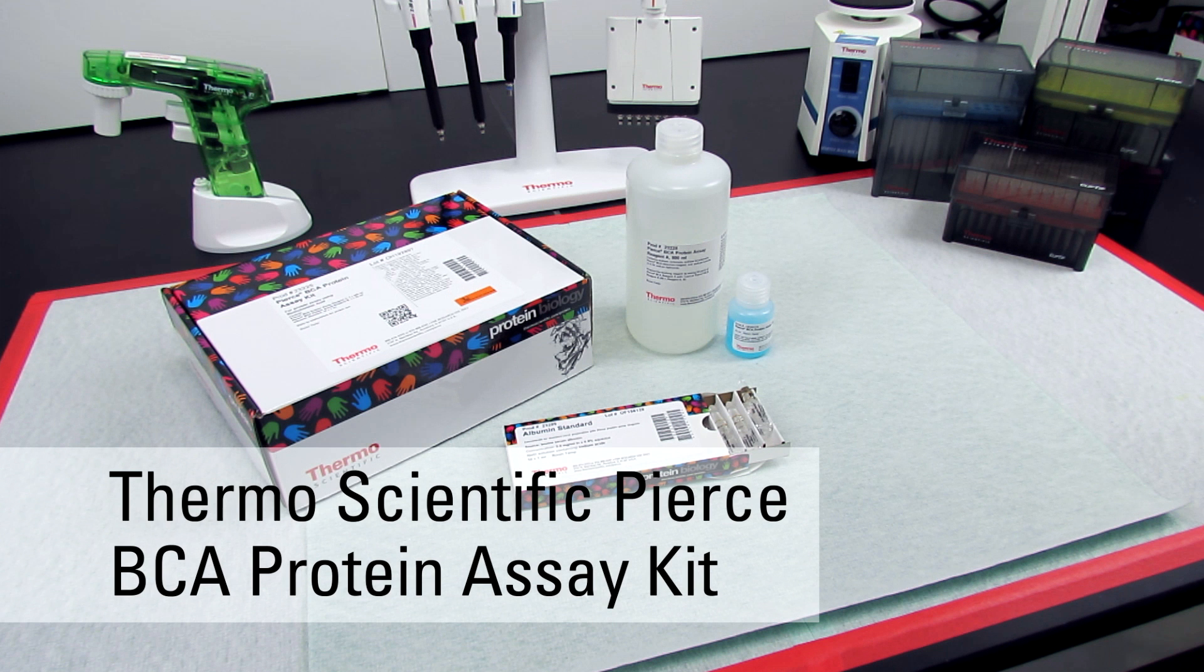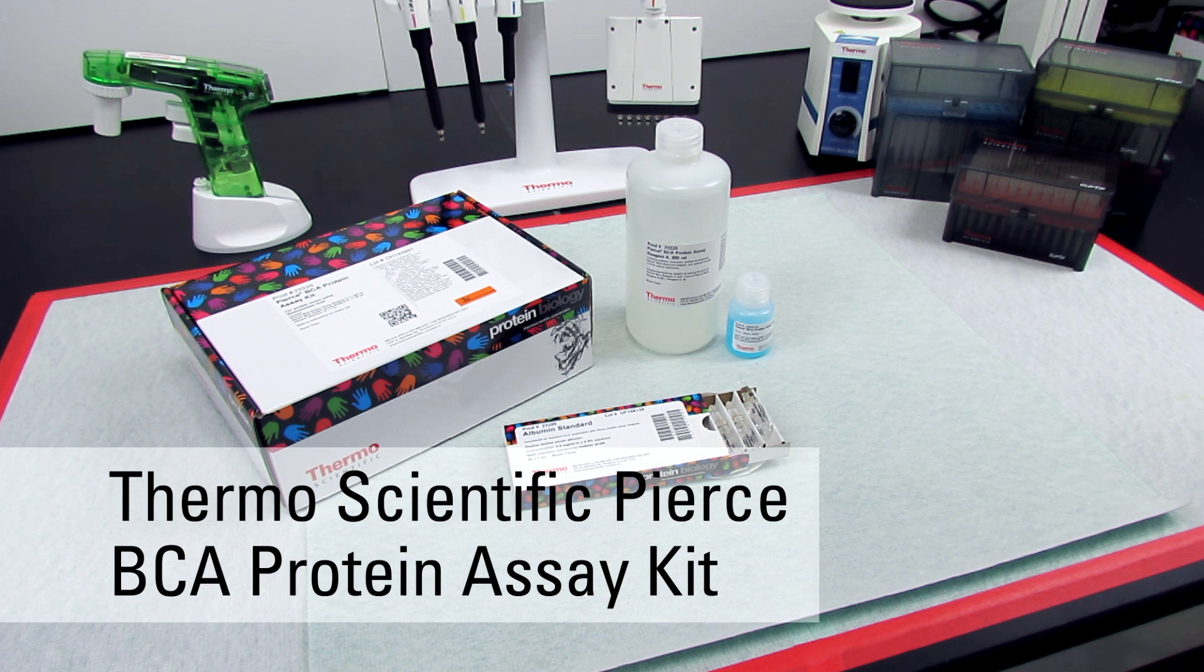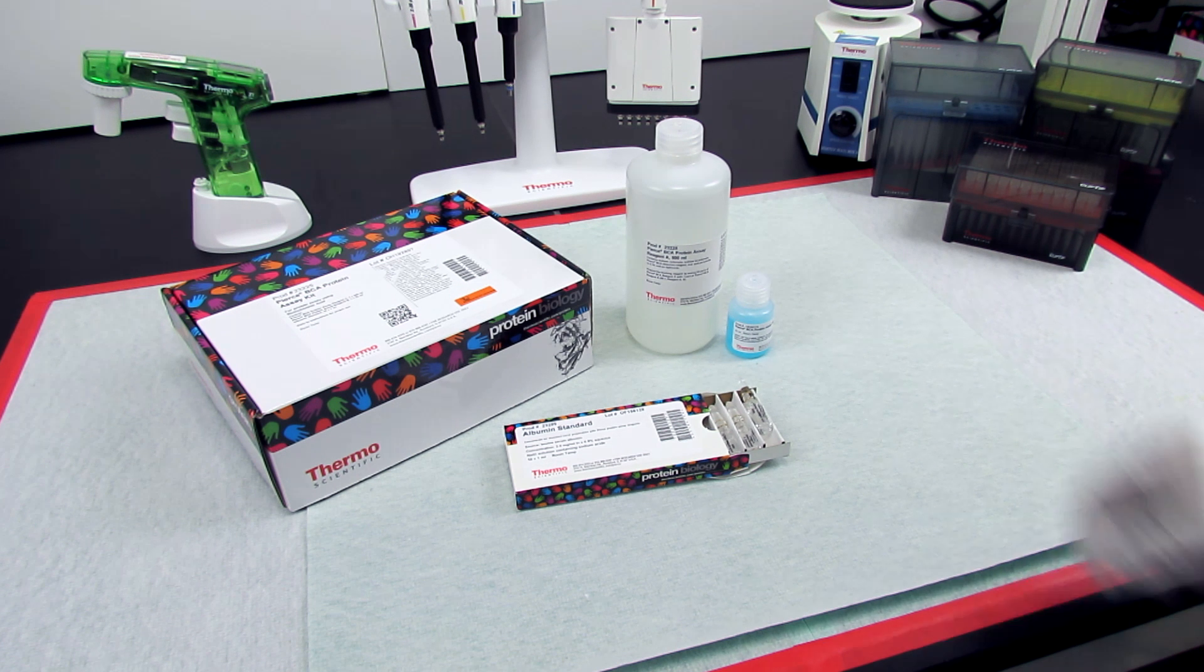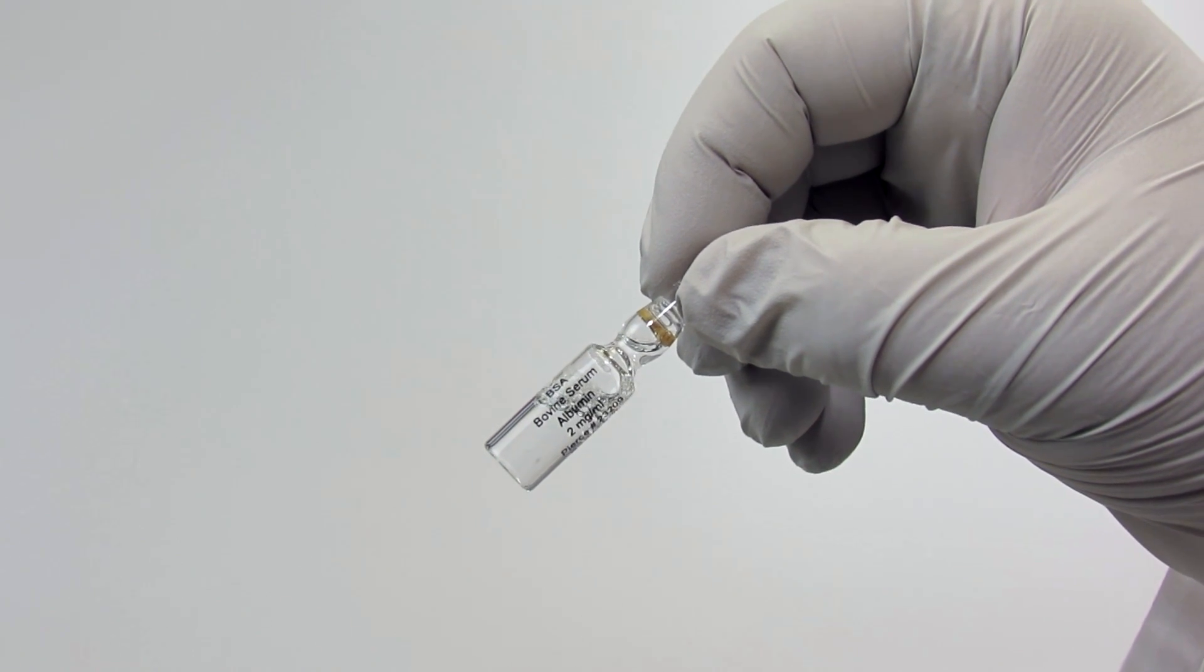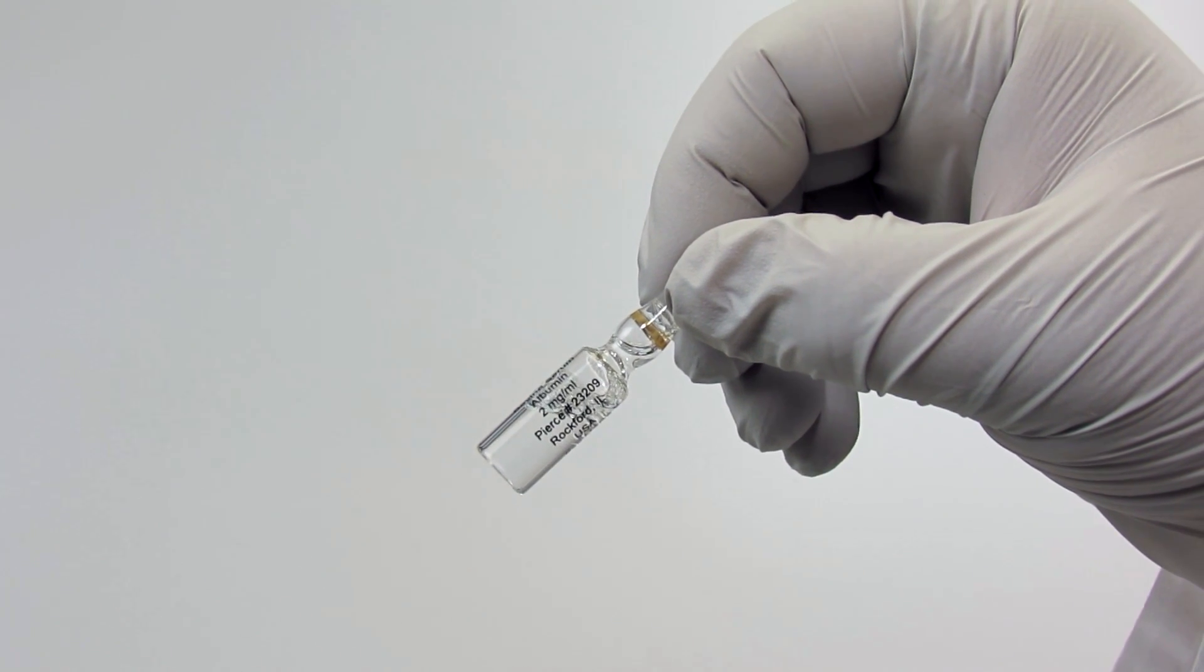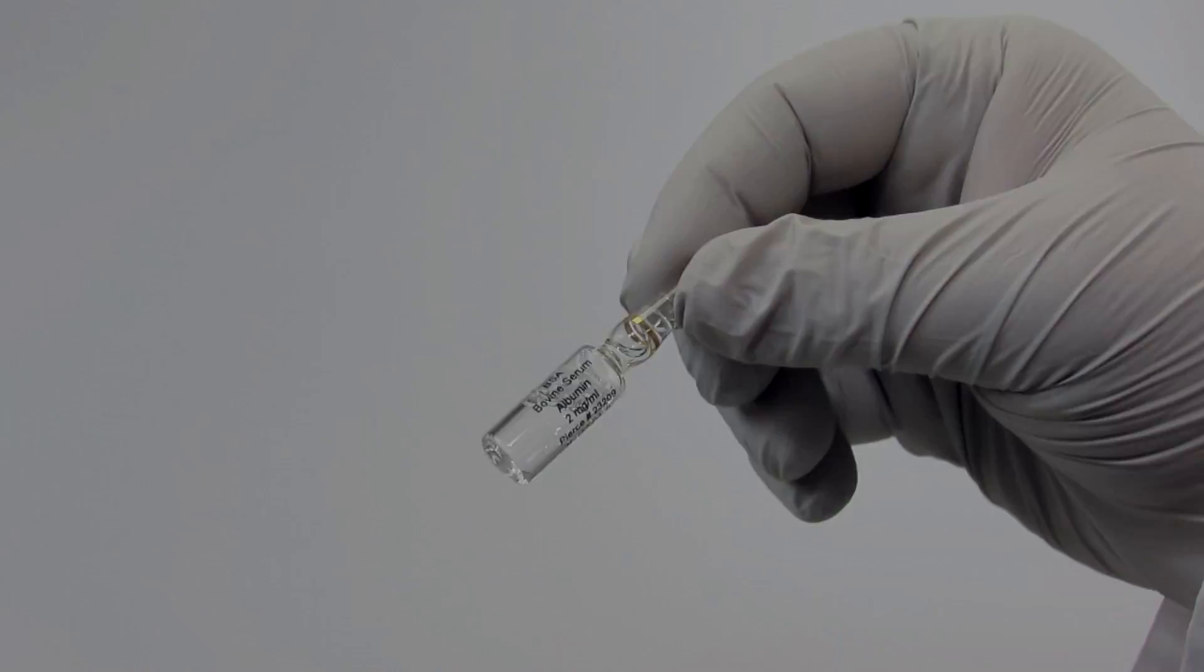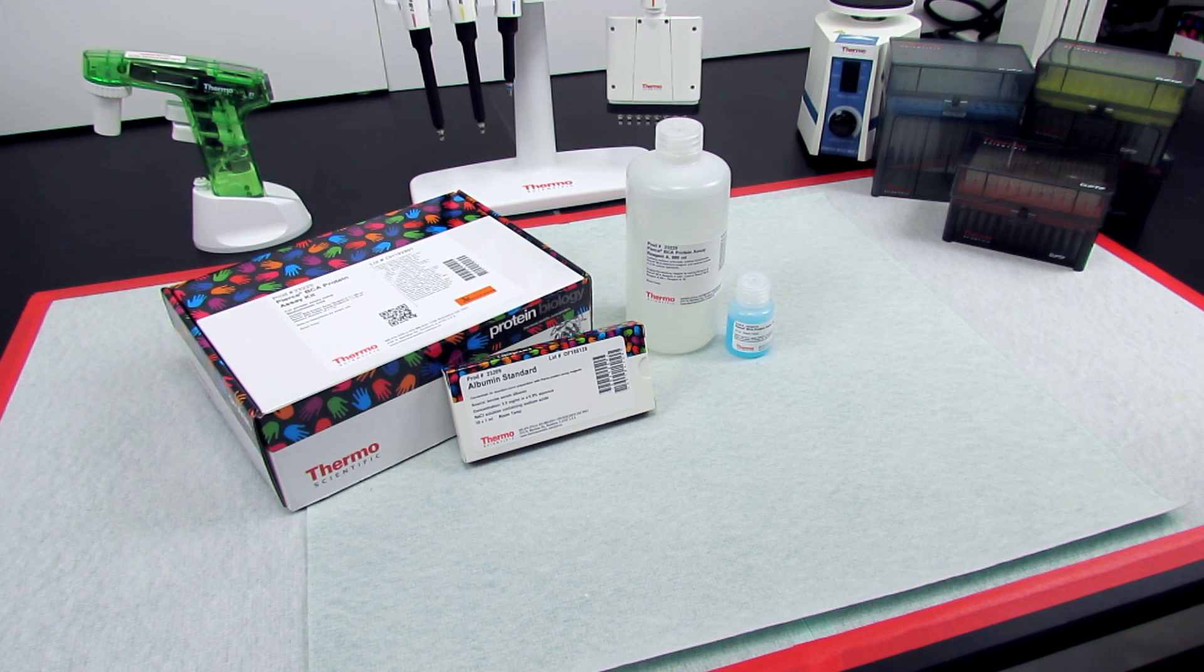The ThermoScientific Pierce BCA Protein Assay Kit includes all reagents needed to accurately determine protein concentration in a sample, including purified bovine serum albumin standard in single-use 1 mL ampules for consistent standard curve generation. The kit includes protocols for both microplate and test tube-based assays.